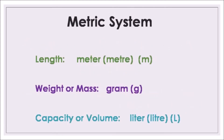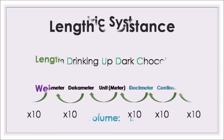The metric system is used to measure length, and we use the meter to measure length or distance. For measuring weight or mass we use the gram, denoted by G. For capacity or volume we use the liter, denoted by capital L. Those are the base units.